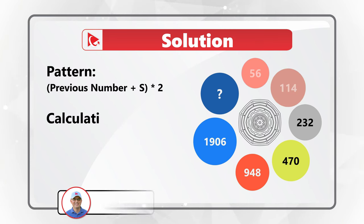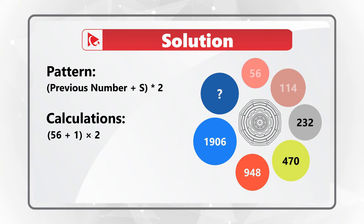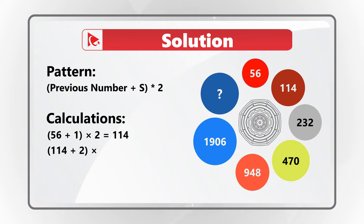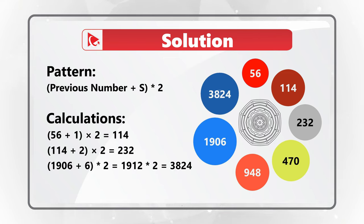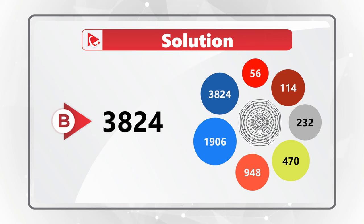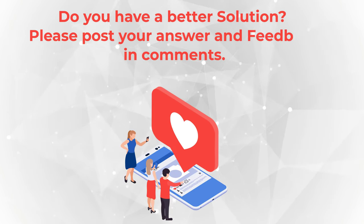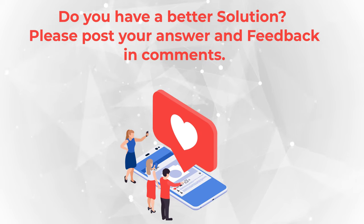The first number is 56. Adding sequence position 1: (56 + 1) × 2 = 57 × 2 = 114. Then (114 + 2) × 2 = 116 × 2 = 232. For the final number: (1906 + 6) × 2 = 1912 × 2 = 3824. So the answer is choice B — 3824.